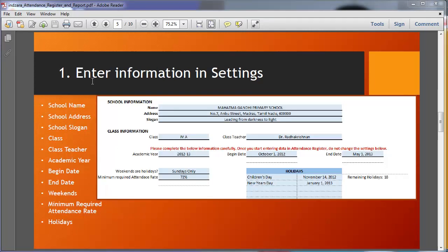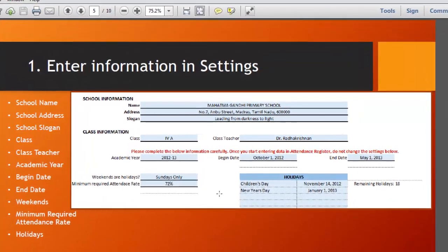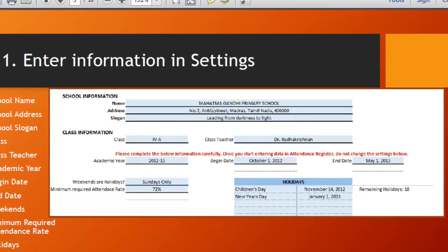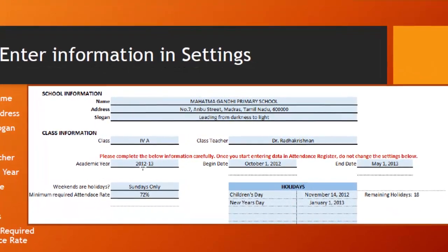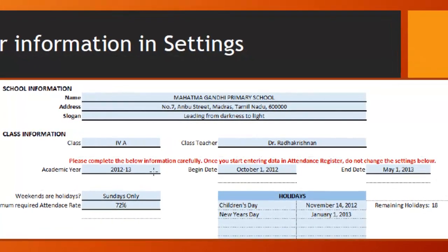Now step number one is to enter the information in the settings worksheet. This is a screenshot from the settings worksheet. You can see there's information about the school, information about the class, and some information that's very critical to the template. Definitely pay very close attention to this. Once you've started entering information in the attendance register, don't come back here and change some of these values because that could cause errors in your data. So definitely enter your information here first before you go to step number two.